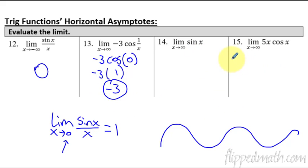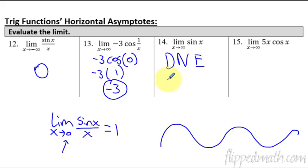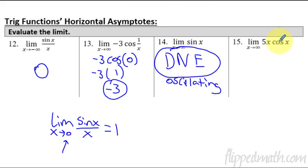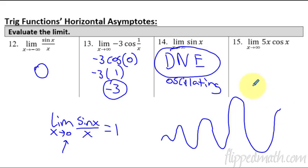The last two problems are the same type. Sine x is just a wave that bounces back and forth. As x approaches infinity, does the wave slow down or become a specific number? No — it just bounces back and forth. So there is no limit; the limit does not exist because it is oscillating, never getting closer to a specific y value. Similarly, cosine x times 5x is a wave that keeps getting bigger and bigger — it also does not exist because it is oscillating.